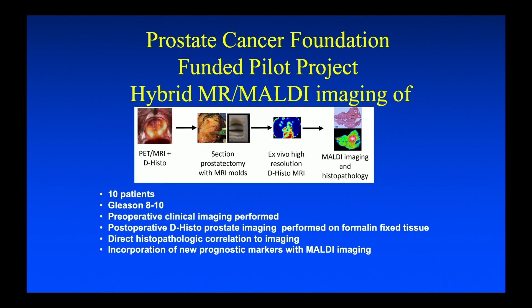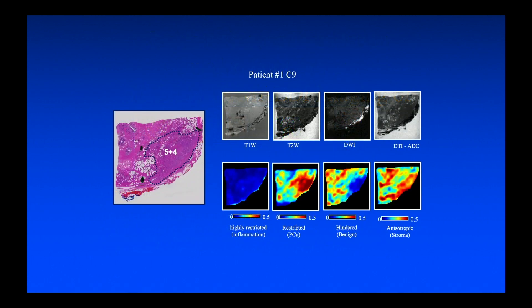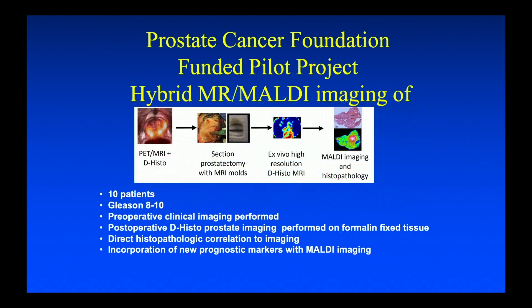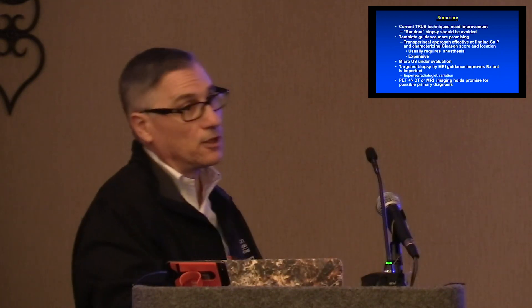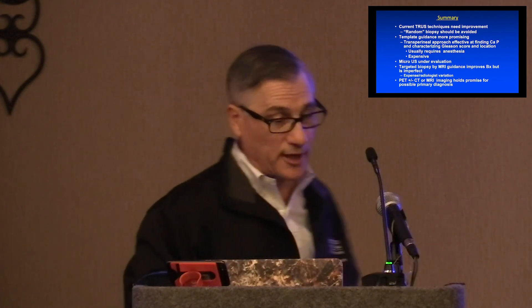We've got a lot of stuff going on at Wash U. The Prostate Cancer Foundation has funded a number of studies. You can find terrific pictures — here's a Gleason 9 focus within the prostate. Looking at these different mathematical permutations, you can really, really see the cancer. So I think the future is very bright — we will have much better imaging and biopsy than just conventional MRI. Whether it's going to be this high-frequency ultrasound or a combination of PET and MRI remains to be seen. Thank you very much.